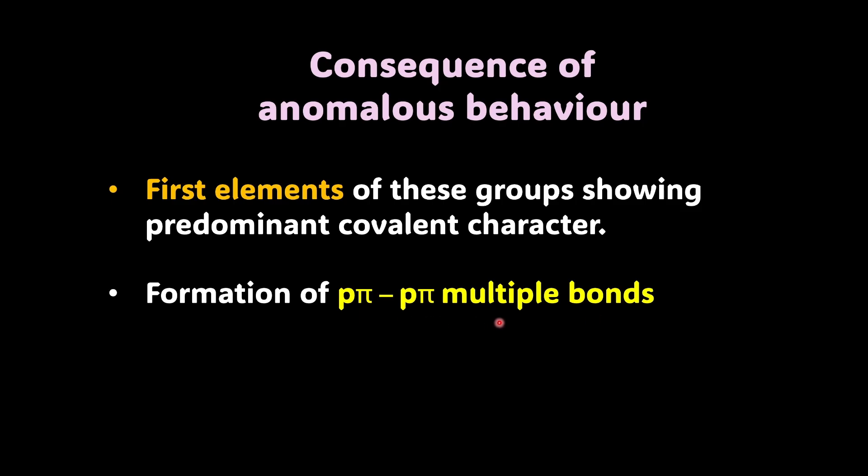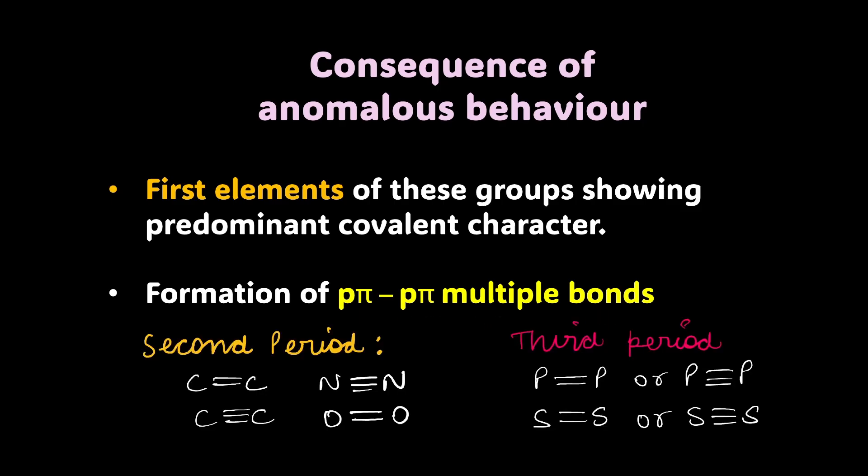The next one is the formation of pπ-pπ multiple bonds. So, if I take second period elements, you would see that they form these double bonds or triple bonds. But if you see these third period or onward elements, you would not see P double bond P, S double bond S. So, they are not forming multiple bonds with its own cells. Though you might see that P double bond O exists or S double bond O exists, but to itself, we can see that they never form these kind of multiple bonds. So, yes, this is again one of the consequences of anomalous behaviour and the reason is pretty simple. The 2p-2p overlap is stronger than a 3p-3p overlap or a 3p-3d overlap. Hence, this kind of multiple bonding exists with these second period elements.